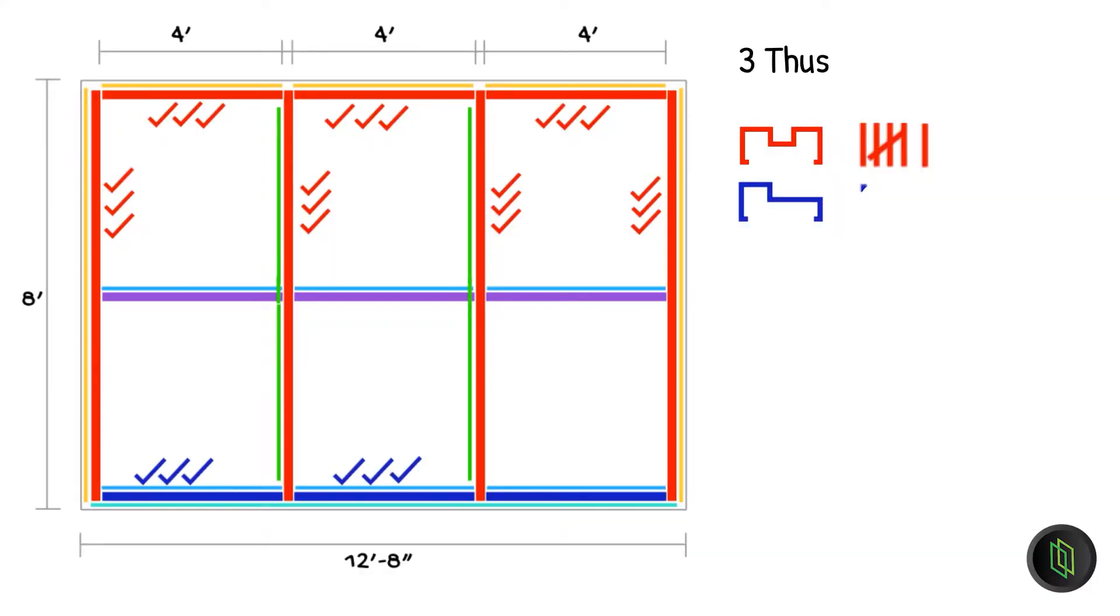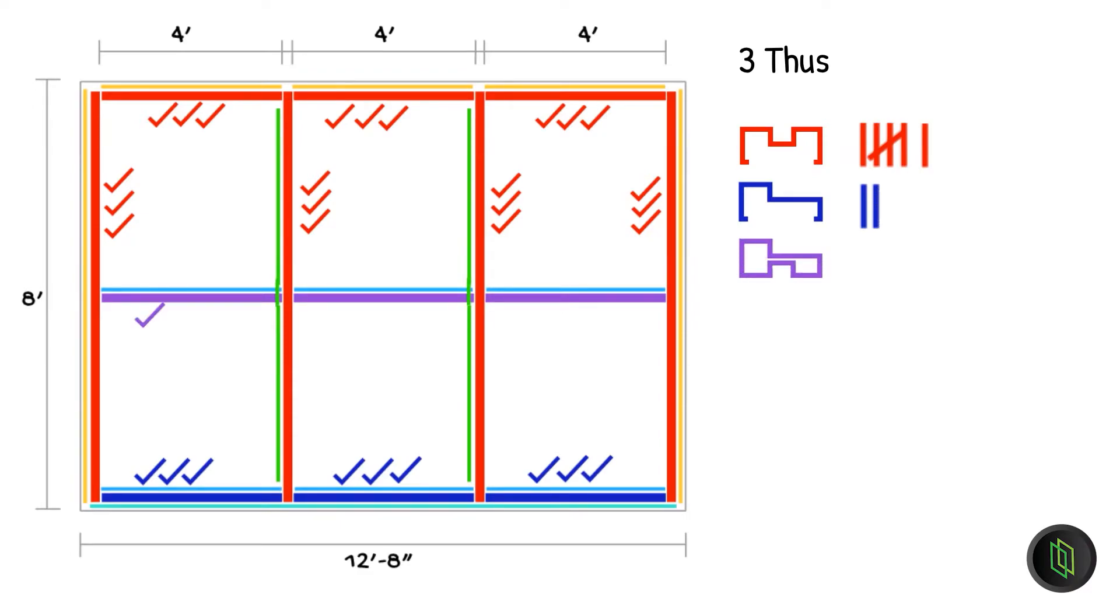Here you're going to notice that for the sill we're going to need two sticks even though we only used one and a half. Now we do the rest the same way. It's helpful to have different color markers.